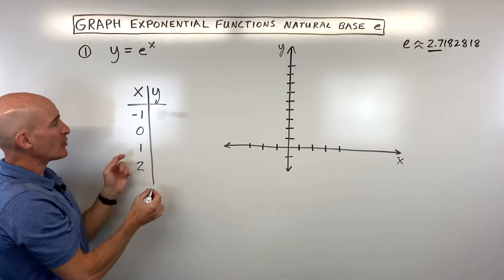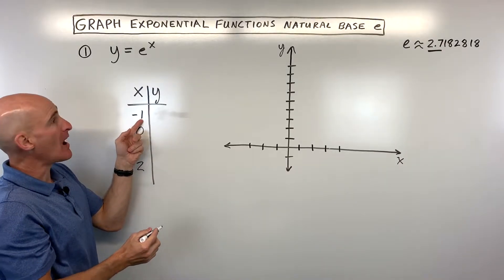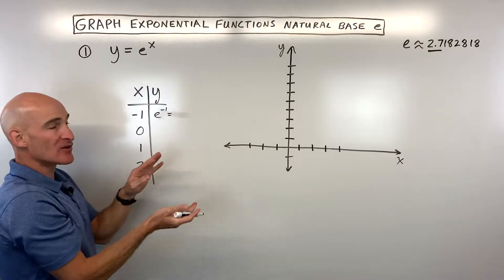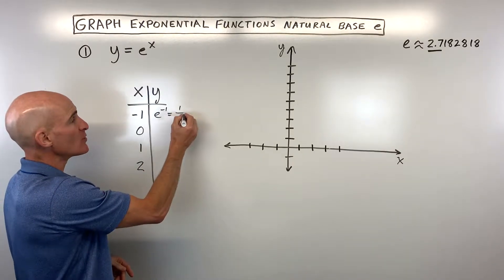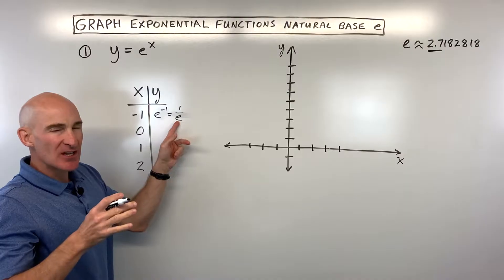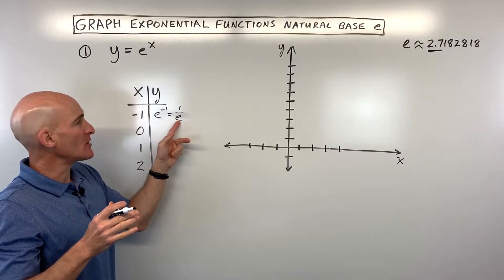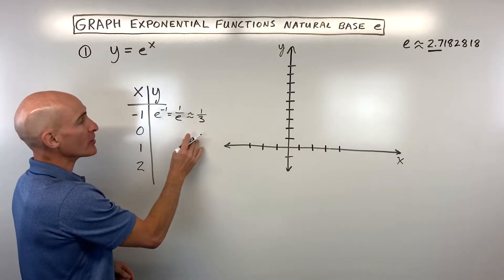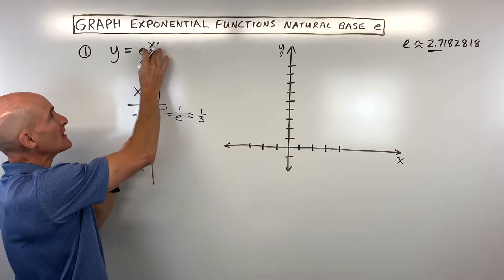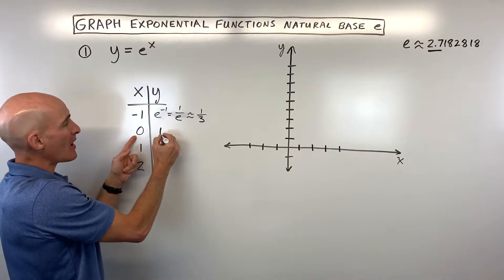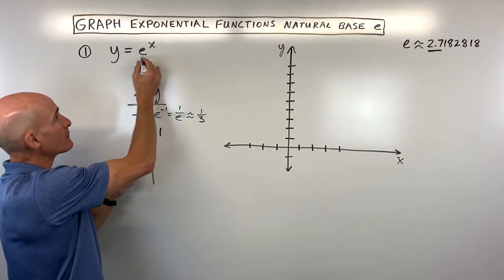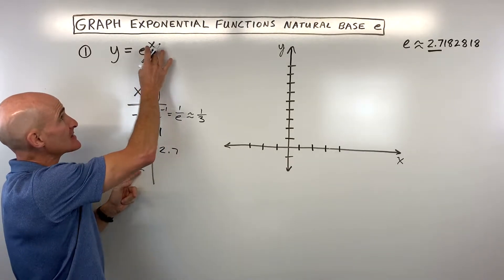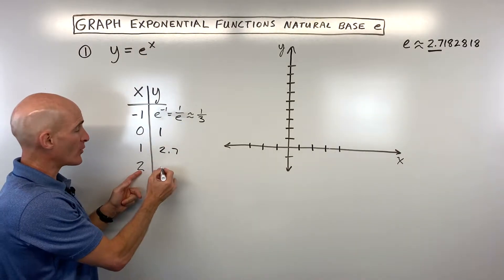If we make a little table, e to the negative first power — remember, the negative exponent tells us to take the reciprocal — so this is going to be one over e, which is approximately one third. When we put zero in, e to the zero power is one. e to the first is e, which is about 2.7. And e to the second power is about 7.4.